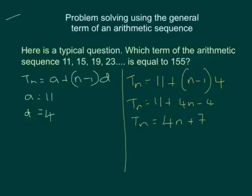Now, which of those terms is equal to 155? So what we do now is we substitute the 155 in for t_n because we're trying to find the nth term.